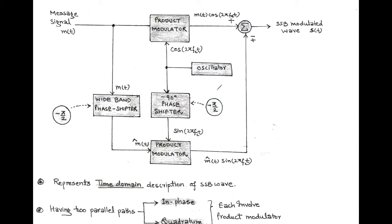As shown in the figure, the sinusoidal carrier is generated by an oscillator. cos(2πf_c t) is the input of the in-phase product modulator, and sin(2πf_c t) is the input of the quadrature product modulator — both sinusoidal carrier signals in phase quadrature. Also, this method uses a special block called a wideband phase shifter, designed to produce the Hilbert transform m̂(t) in response to the incoming message signal m(t). The message signal m(t) is the input of the in-phase product modulator, and its Hilbert transform m̂(t) is the input of the quadrature product modulator.